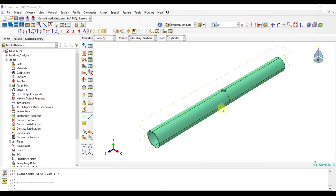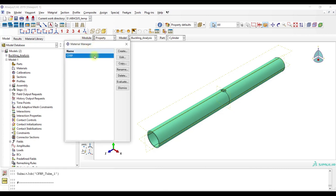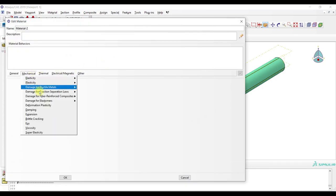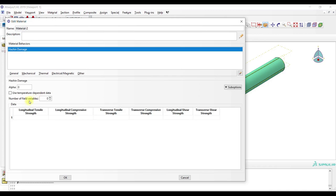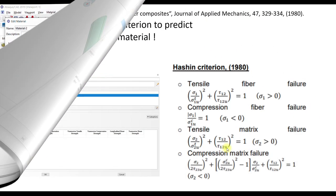In this video, I want to explain the Hashin damage criterion for fiber reinforced plastics. You can find it in the property module: go to Material Manager, then Create Mechanical, then Damage for fiber reinforced composites - Hashin damage. In the next part, we will explain every single variable here.